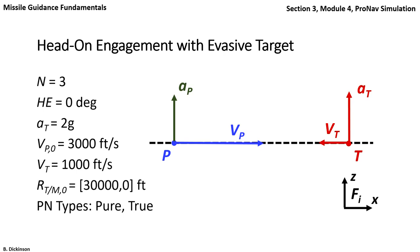We'll look at both pure and true proportional navigation. First, true ProNav, and for all simulations shown in this module, unless otherwise noted, integration was performed with 4th-order Runge-Kutta with a time step size of 1/1,000th of a second.